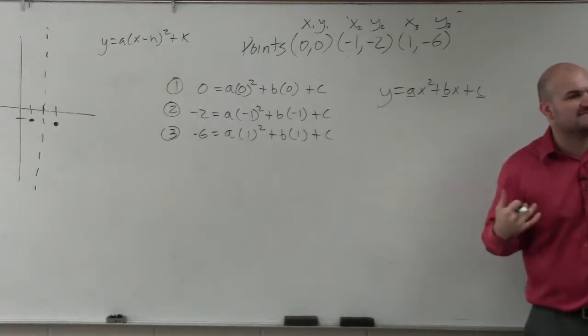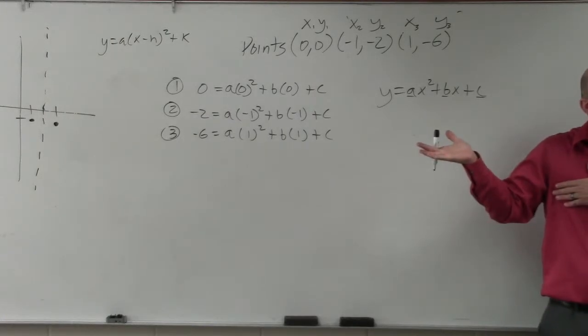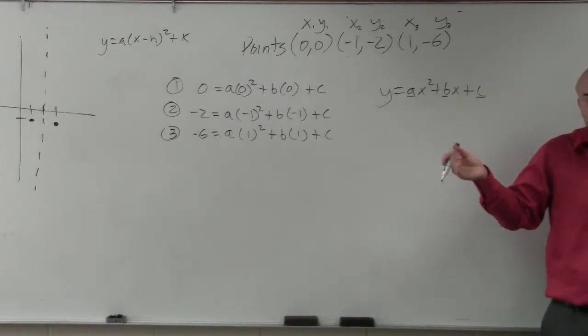Equation three is I'm plugging in negative 6 equals a times 1 squared plus b times 1 plus c. Does everybody see how I inputted the x values or the x coordinate for each graph into as the x value for the equations? Does that make sense? And then I've plugged in the y coordinates.